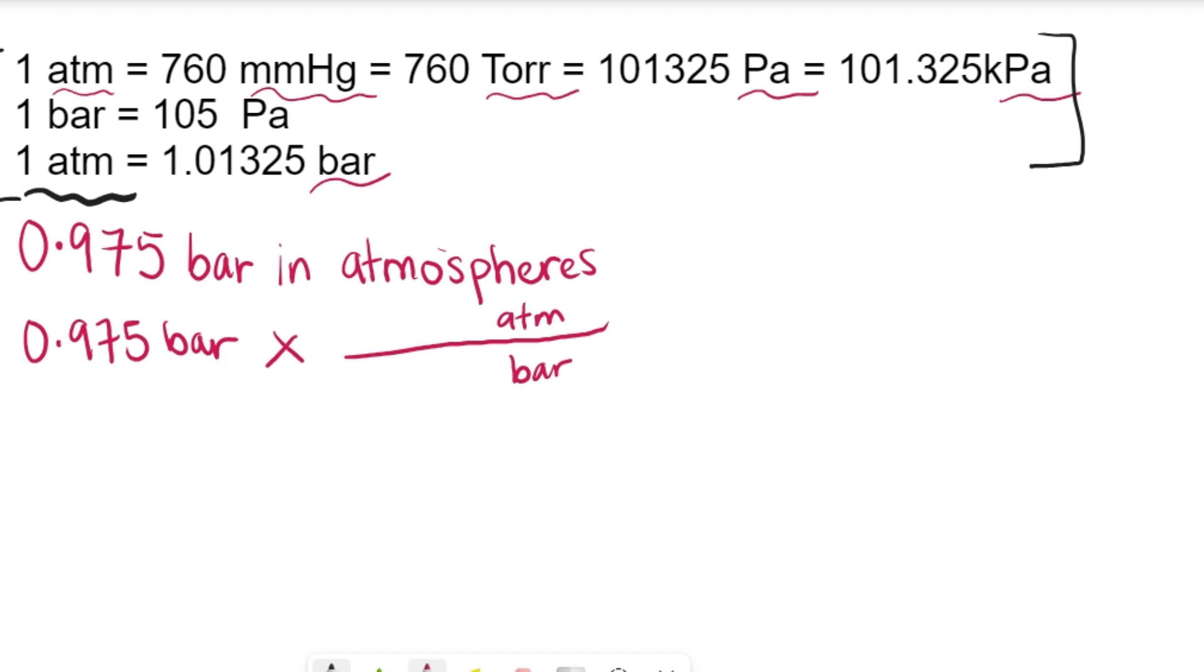We're going to have that because that's the standard conversion numbers or values. So we're going to have one atmosphere and then 1.01325 bar, and then we're going to have bar cancel. So what we have here is going to be 0.975 divided by 1.01325 atmospheres.